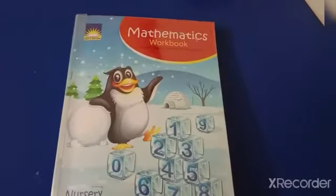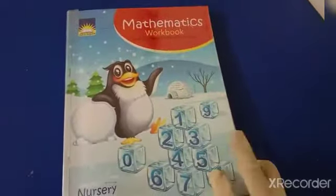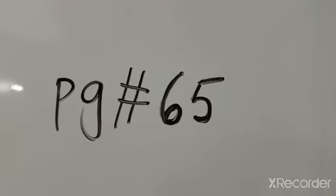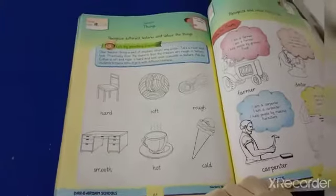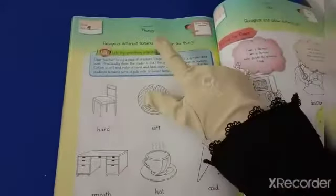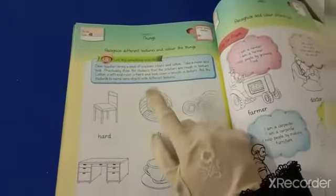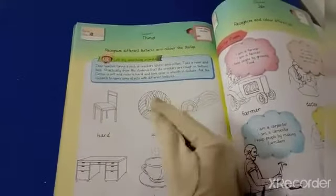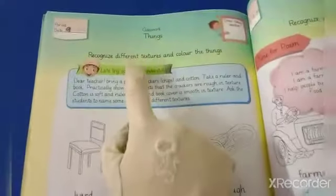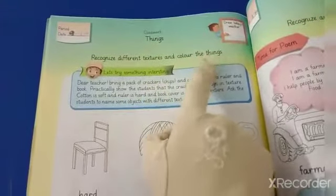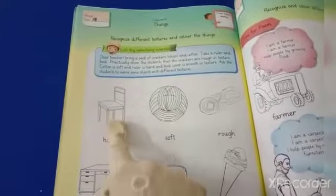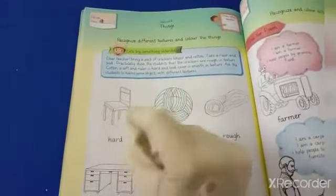Now take out your maths workbook, page number 65. I hope you all have taken out page number 65. Which topic are we doing today? Things, and we have felt the textures. Now look here — it is written: 'Recognize different textures and color the things.' You have to feel the different textures and color them.